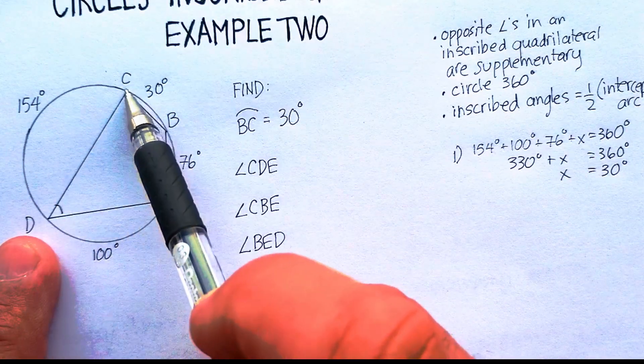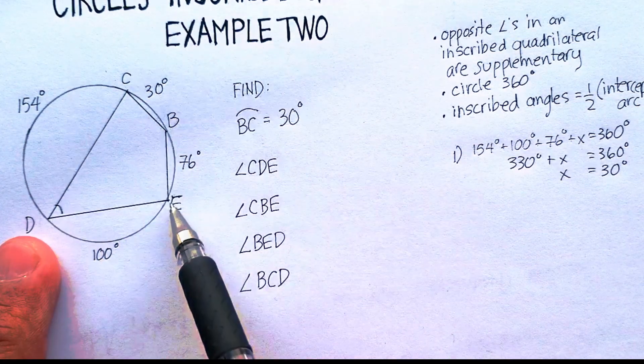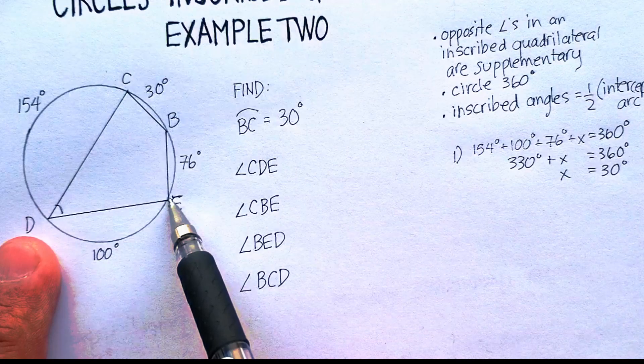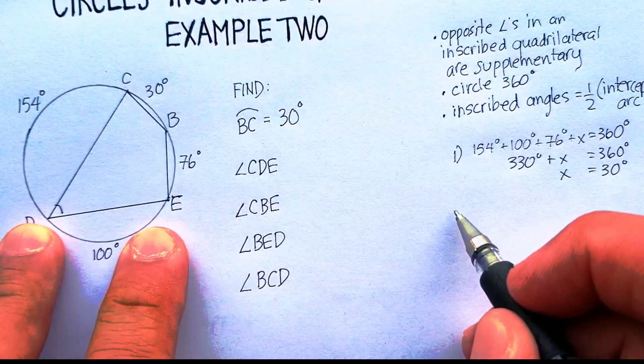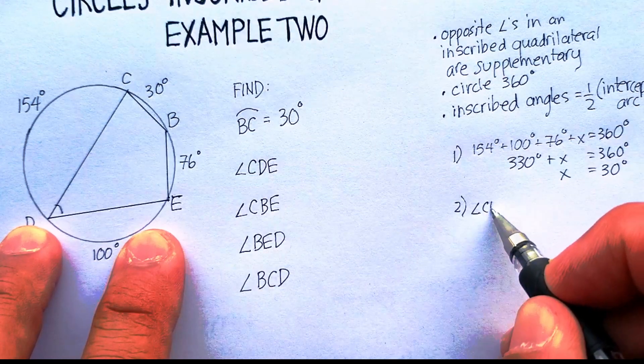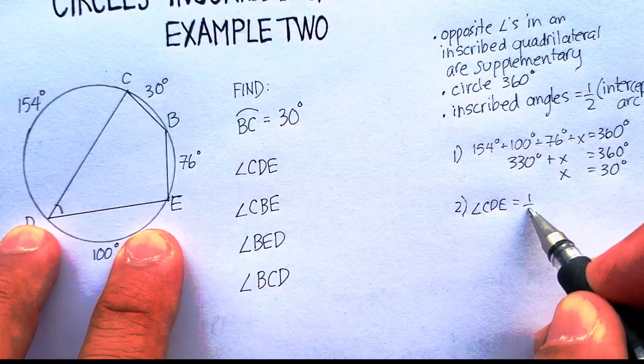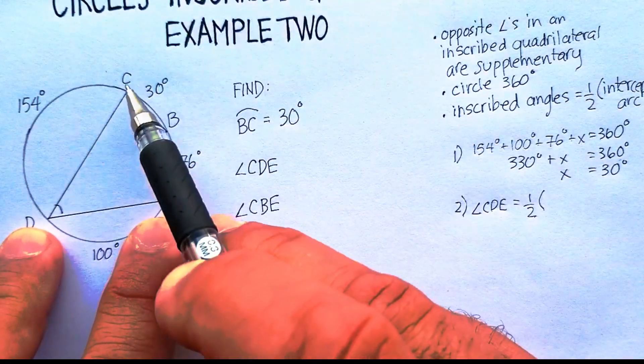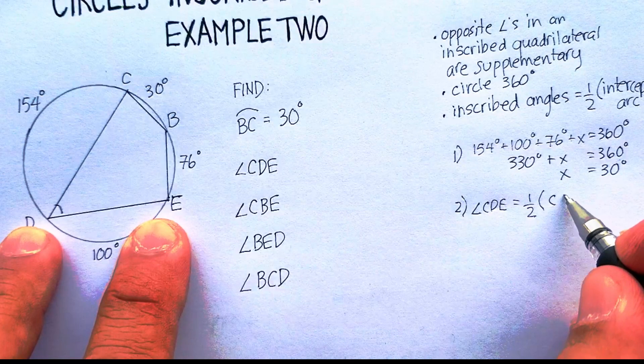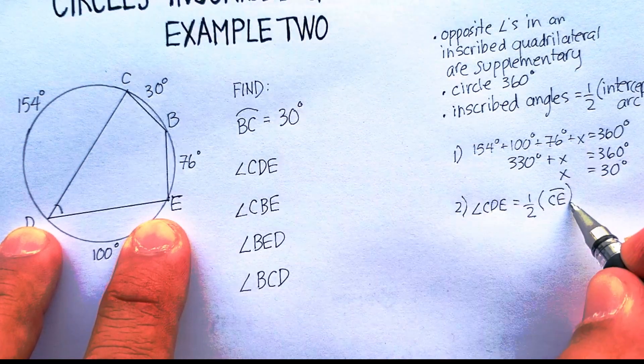So if I go out to here, and I go out to here, the intercepted arc is CDE. So I'm going to say angle CDE is equal to one half the arc C all the way to E.